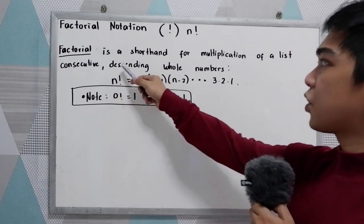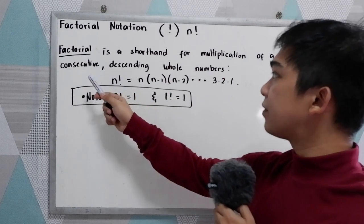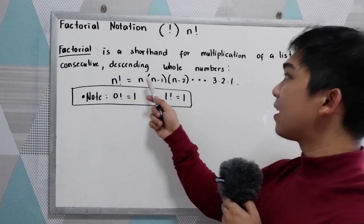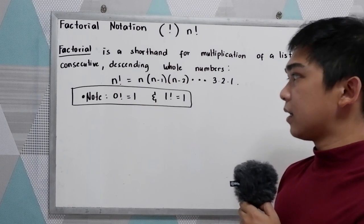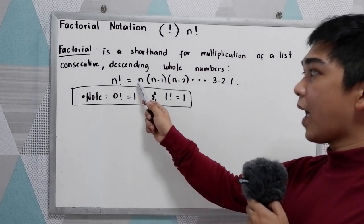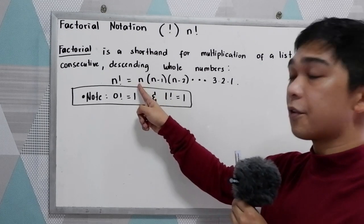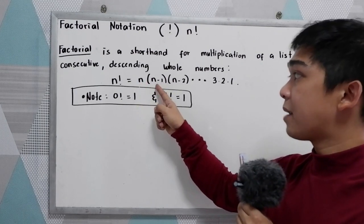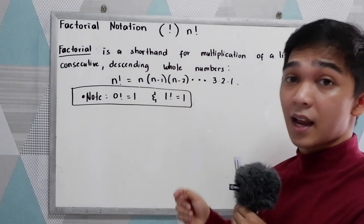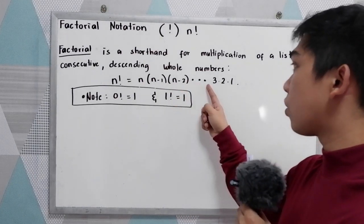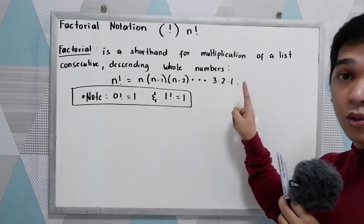Factorial is a shorthand for multiplication of a list of consecutive descending whole numbers. So if we have n factorial, that is equal to n times n minus 1. So n here is our first factor, n minus 1 is the second factor, n minus 2 is the third factor, and so on until we reach 1.